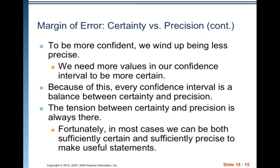To be more confident, we end up being less precise — we need more values in our confidence interval to be more certain. Because of this, every confidence interval is a balance between certainty and precision. The tension between certainty and precision is always there. Fortunately, in most cases we can be both sufficiently certain and sufficiently precise to make useful statements.